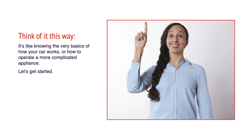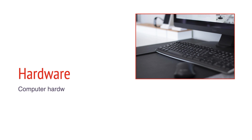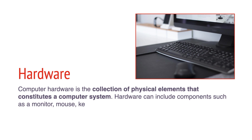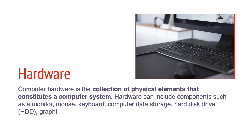Let's get started. Computer hardware is a collection of physical elements that constitute a computer system. Hardware can include components such as a monitor, mouse, keyboard, computer data storage, hard disk drive, graphic cards, sound cards, memory, and motherboard.